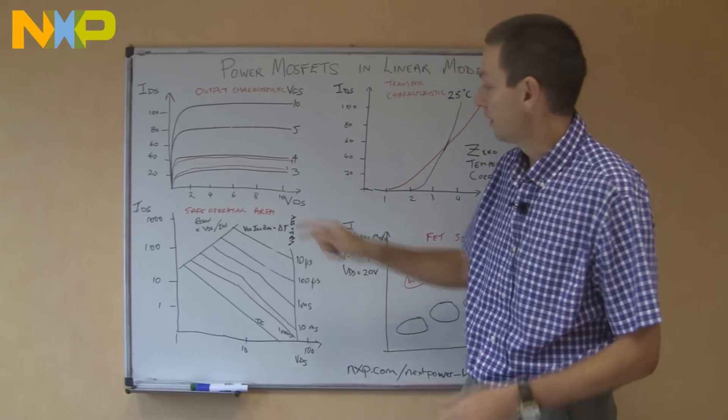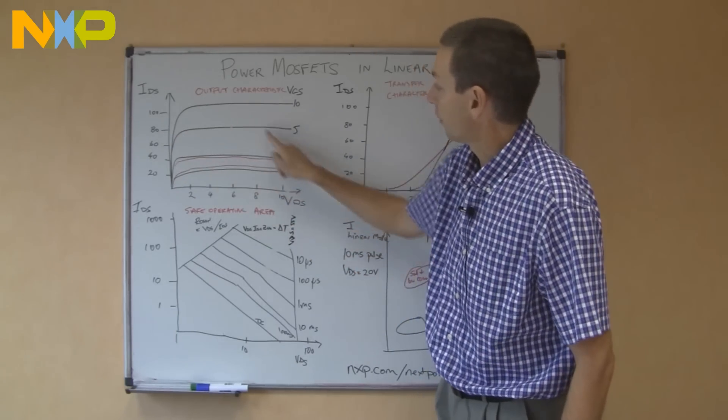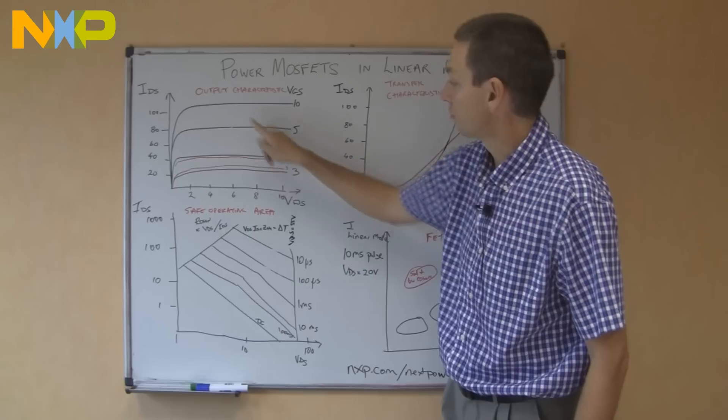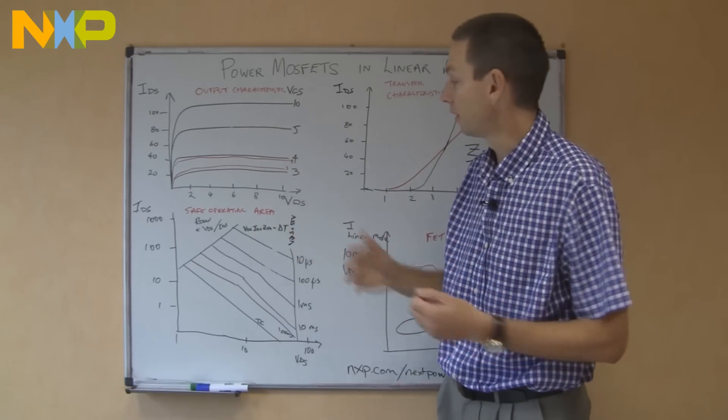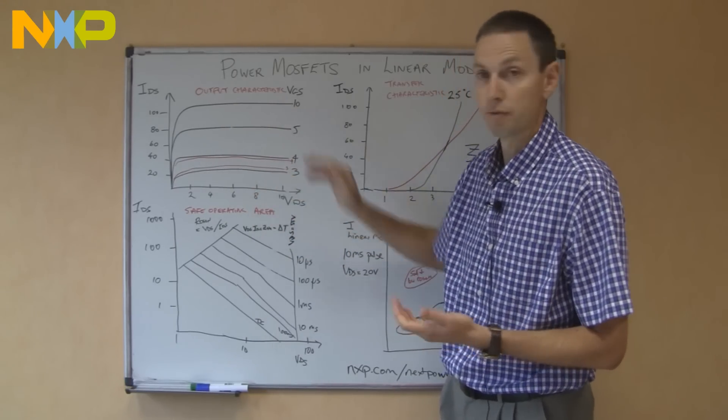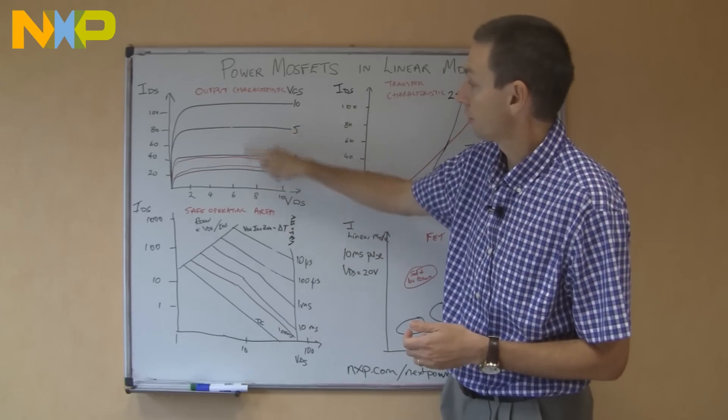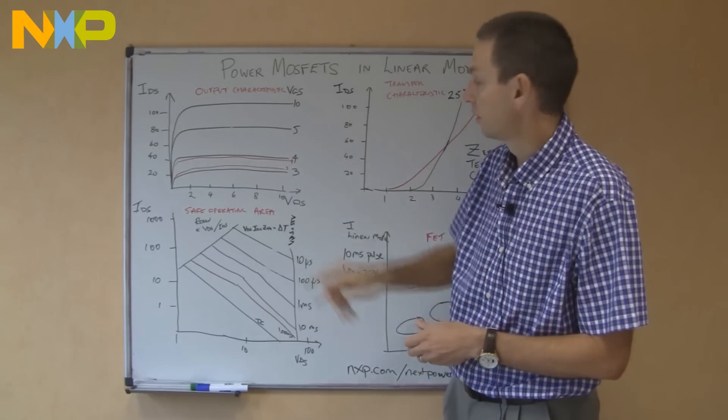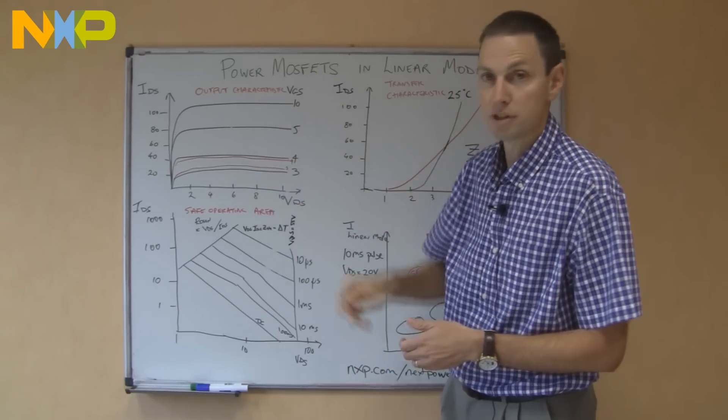But unfortunately, what you can see is to get from here to there, we have to pass through this region in the middle. In this region in the middle, as the MOSFET is switching, there's an appreciable source drain voltage, it could be 5, 6, 7 volts, but there's also current flowing at the same time, 30, 40, 50 amps. So this is a high power dissipation situation.